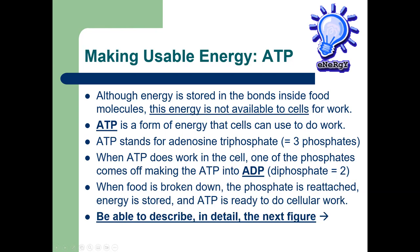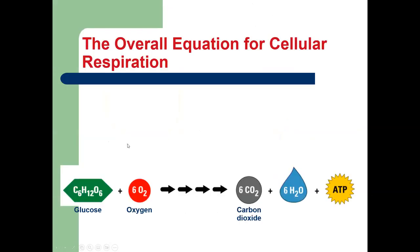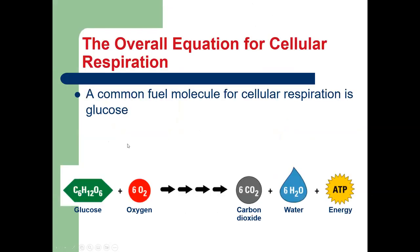This figure — not on the test, but helpful — shows ATP with adenosine and three phosphates. When you do work such as exercise, the phosphate comes off and you have ADP. When you eat food and break it down in your cells, that converts the ADP and phosphate back into ATP.